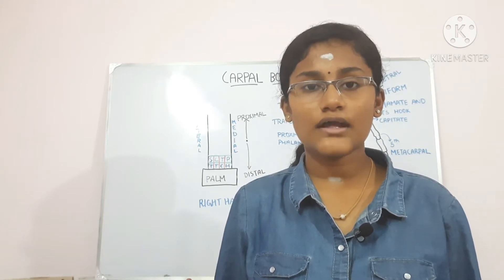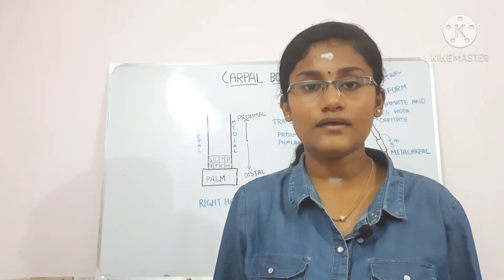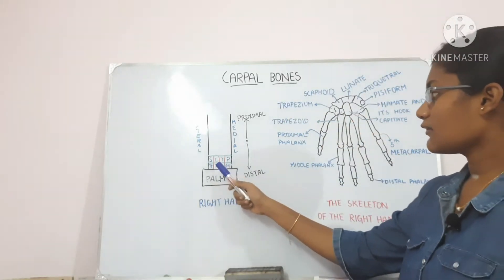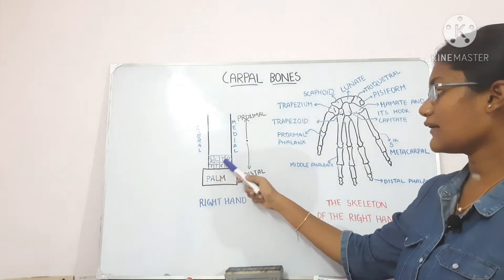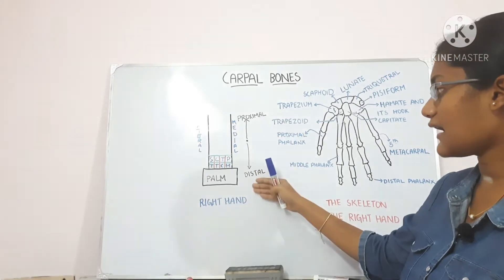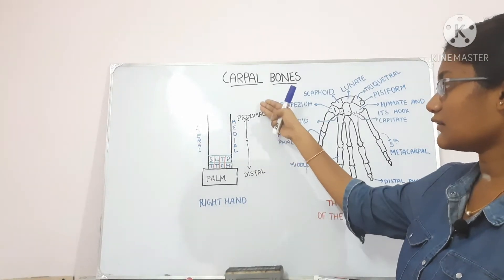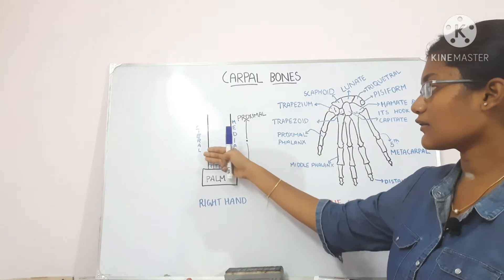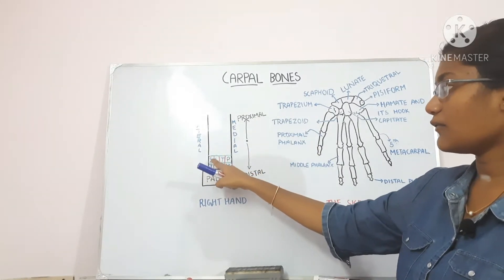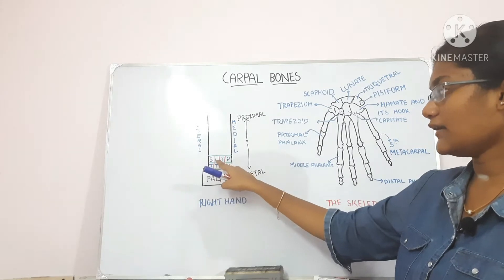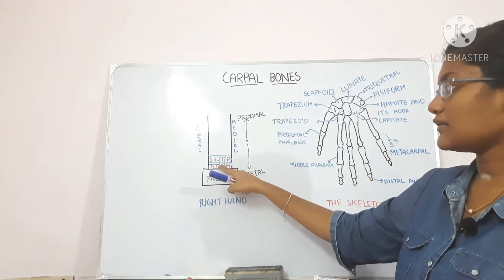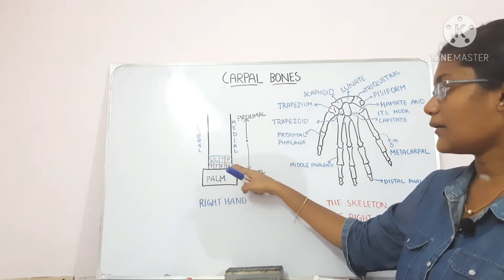Now we are going to name all the 8 bones from the lateral side to the medial side. This is the proximal row and this is the distal row. Distal row means towards the end of the hand and proximal row means towards the centre of the hand. From the lateral side, the first bone is the scaphoid, then lunate, then triquetral, then pisiform, and then the trapezium, trapezoid, capitate and hamate.